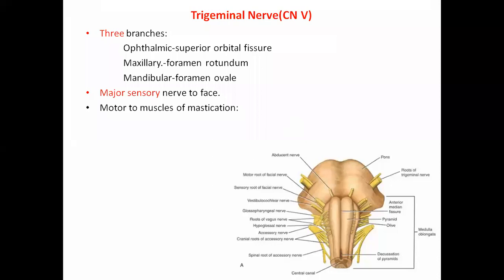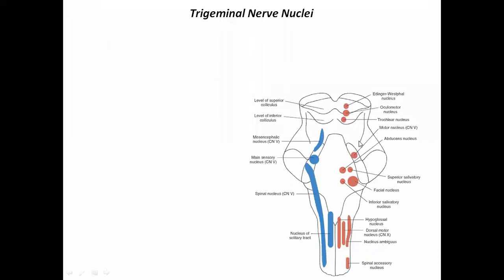The trigeminal nerve has three divisions: ophthalmic, maxillary, and mandibular. Nuclei are collections of nerve cell bodies within the central nervous system, while ganglia are collections outside the CNS — structurally similar but named differently by location. There are multiple nuclei visible in the brainstem; we will focus on those related to the trigeminal nerve.